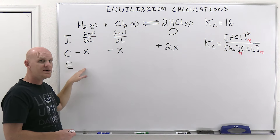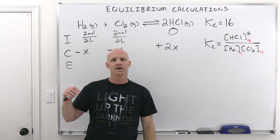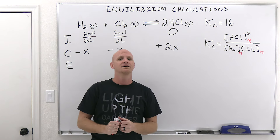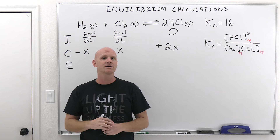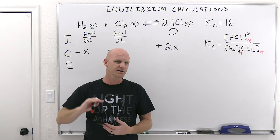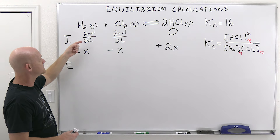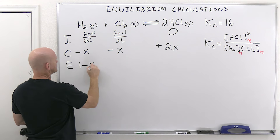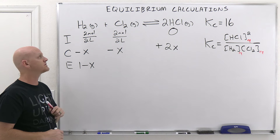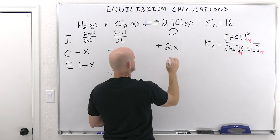Your initial plus your change equals your equilibrium concentrations — however much you start with, add in however much you change by. Two moles over two liters is 1 mole per liter, then plus a negative X is simply 1 minus X — that's your equilibrium concentration for H2. Same thing: 2 over 2 is 1 molar, and 1 molar plus a negative X is 1 minus X. Then 0 plus 2X is 2X. The whole point in setting up this chart is what goes in the equilibrium row, because those are the equilibrium concentrations that properly belong in our equilibrium constant expression.